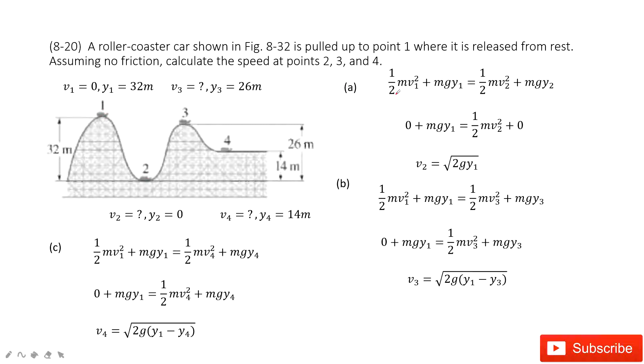So position 1 kinetic energy plus potential energy equals position 2 kinetic energy plus potential energy. Then we input the known quantities and we can find v2 from this equation.